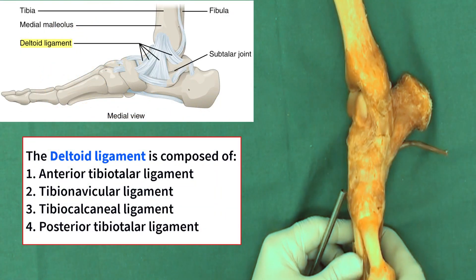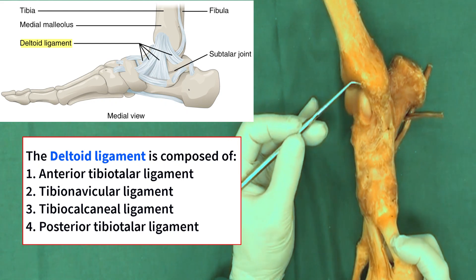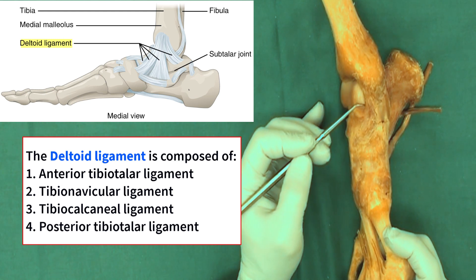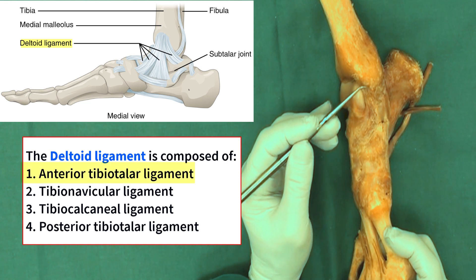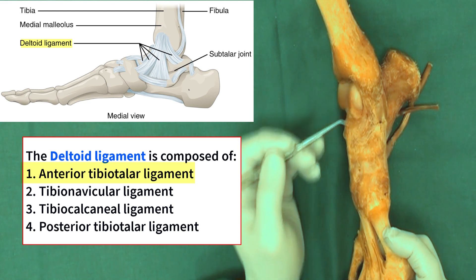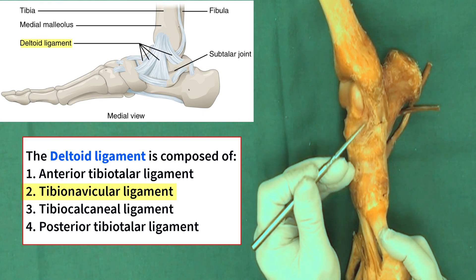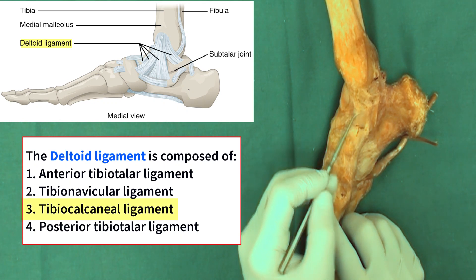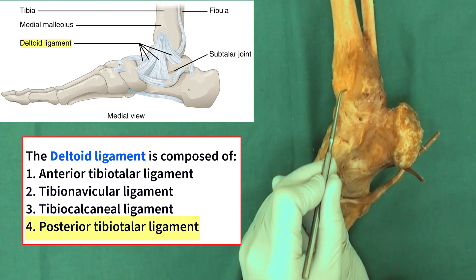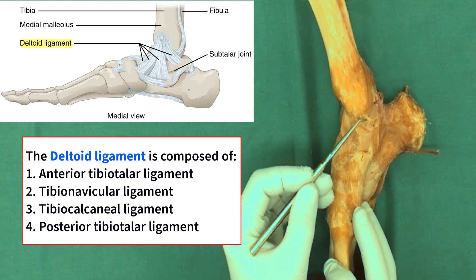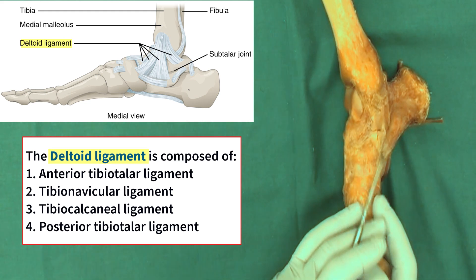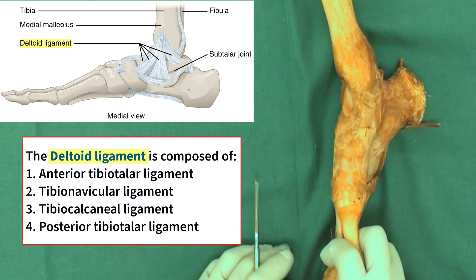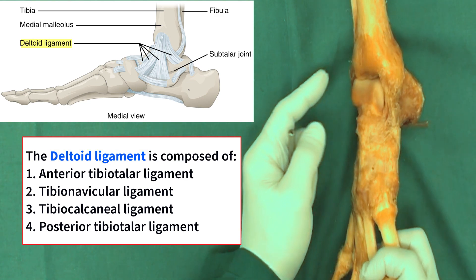On the medial side, the ligaments connect the tibia to adjacent bones. We have the posterior tibiotalar ligament, the anterior tibiotalar ligament, the tibionavicular ligament, and the tibiocalcaneal ligament. All these ligaments together are referred to as the deltoid ligament — or the medial ligament of the ankle — because together they form a deltoid shape. These two groups of ligaments support the ankle joint.